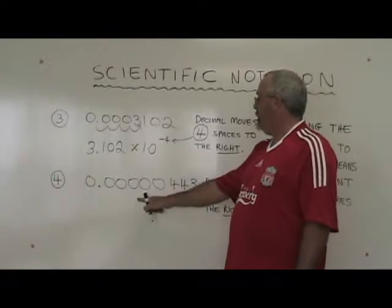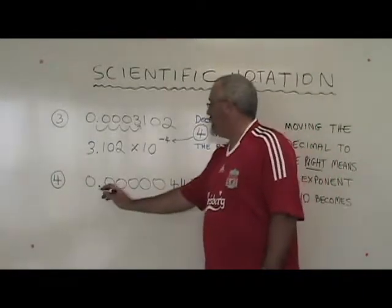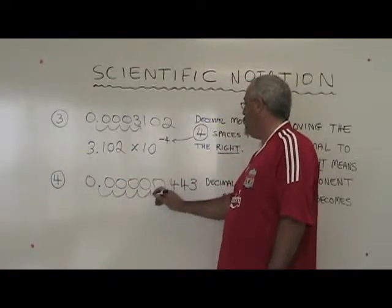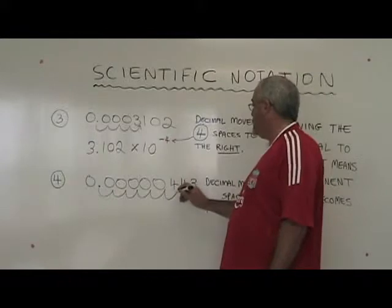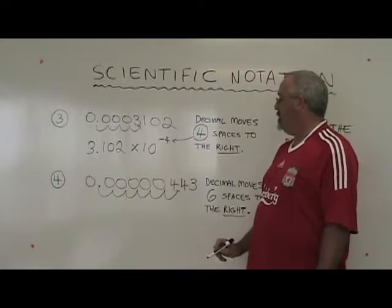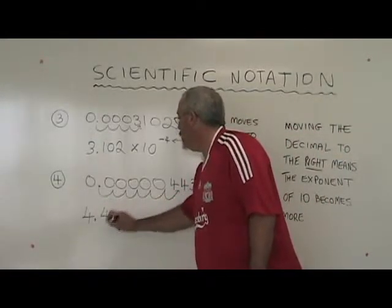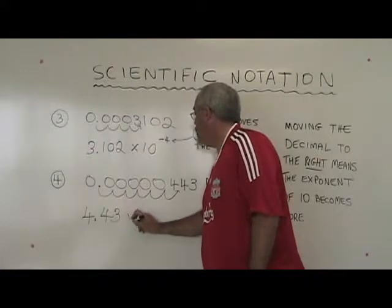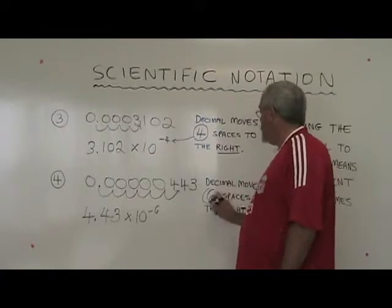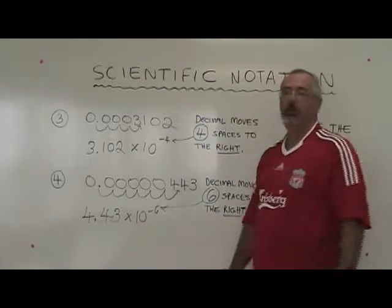In example four, I'm doing the same thing, working with a very small number. I have to move my decimal six spaces to the right. My number becomes 4.43 times ten to the negative six. Because I move six spaces to the right, the exponent of ten is negative six.